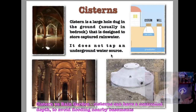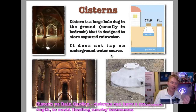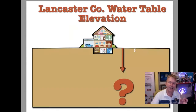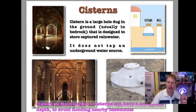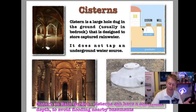Another way to put water in the ground is called cisterns — basically creating underground storage, various ways to do it. A cistern is basically just a container underground.